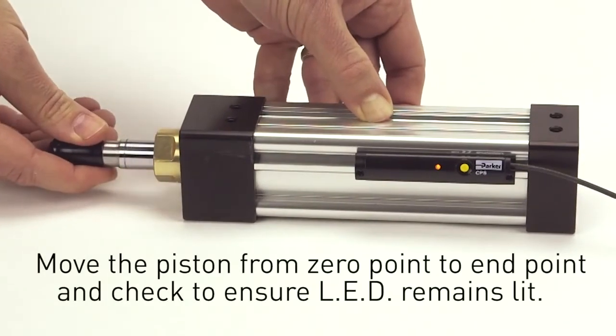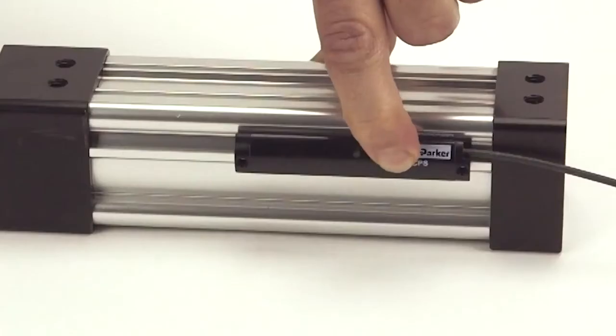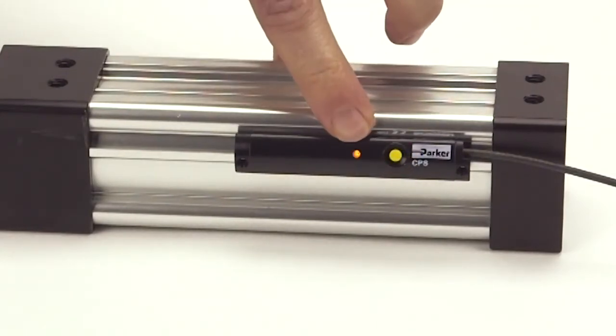Move the piston from zero point to endpoint and check to ensure the LED remains lit. If the LED turns off during the desired range, repeat the configuration steps.